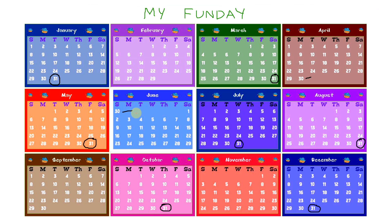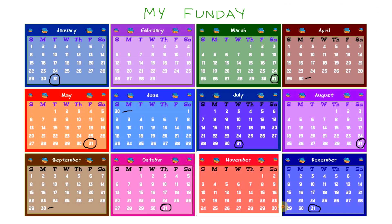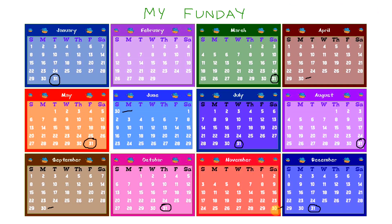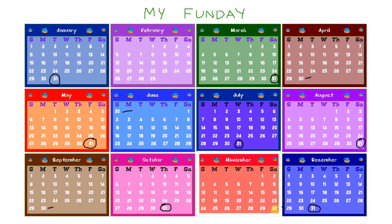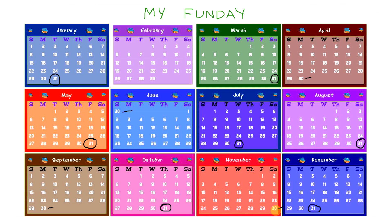Not July, not August. September — September has 30 days. November also has 30 days. So we can see the months that have 30 days are April, June, September, and November.